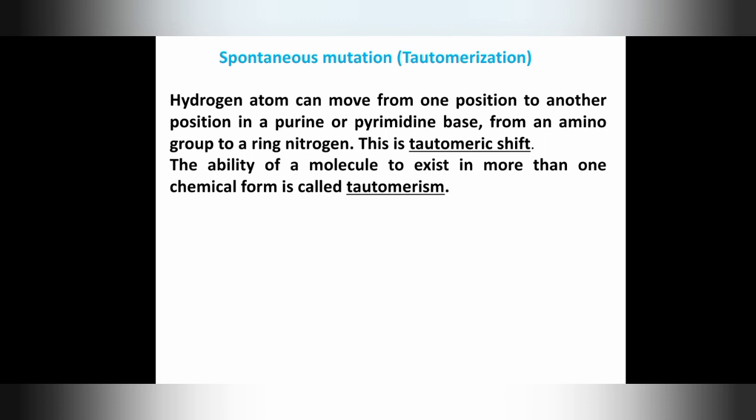The hydrogen atoms present in the nitrogenous bases can move from one position to another in a purine or pyrimidine — from an amino group to a ring nitrogen. This property is the tautomeric shift. The ability of the molecule to exist in more than one form is known as tautomerism.